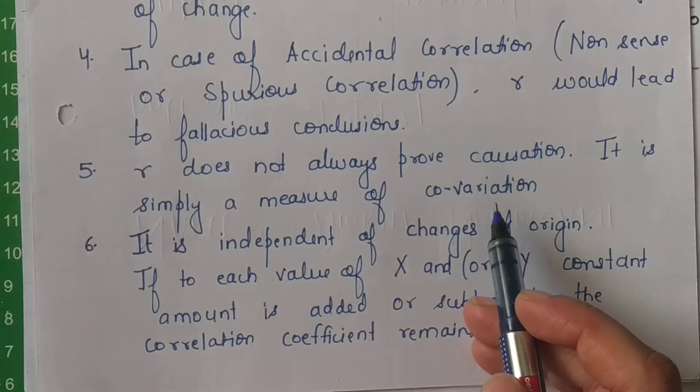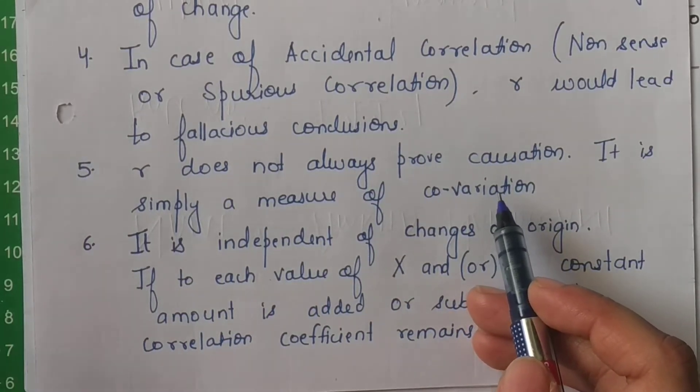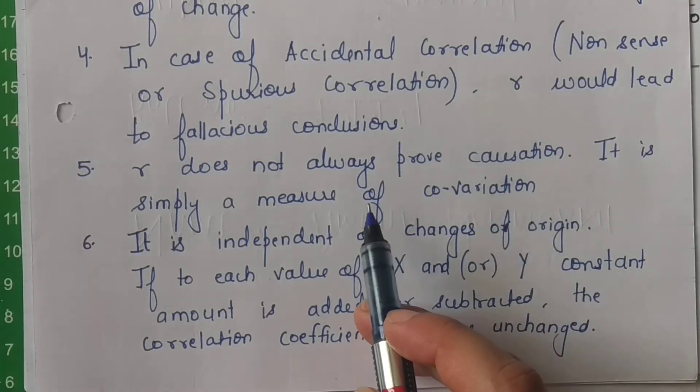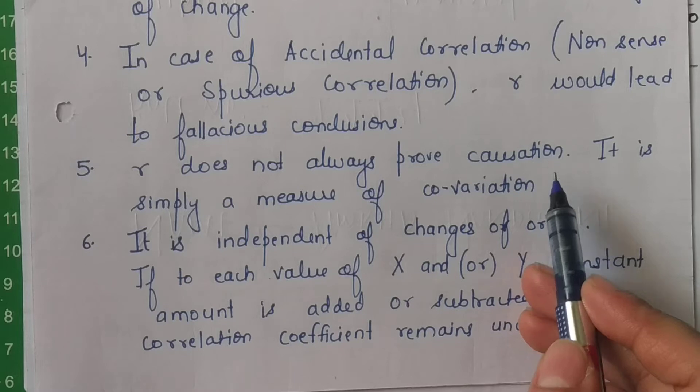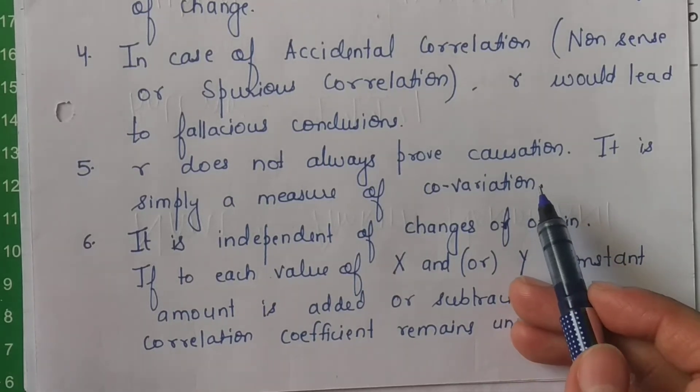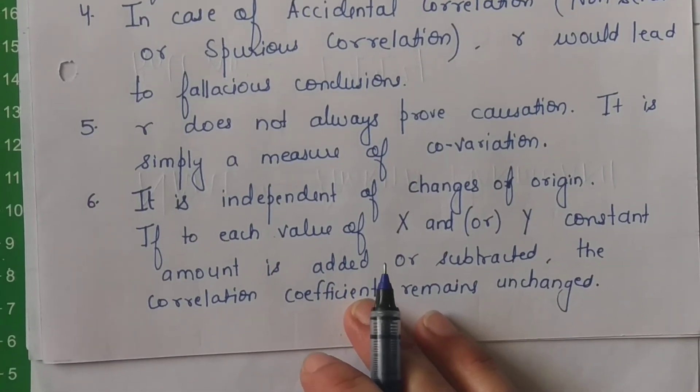r does not always prove causation. It is simply a measure of variation. r ki jo value hai, yeh nahi batata ki kaun sa hai variable cause aur kaun sa variable hai effect. Yeh causation nahi proof karta hai. Yeh sirf aapko yeh batata hai ki ek ke vary hone par dusra variable kaise vary karta hai. It is simply a measure of covariation.